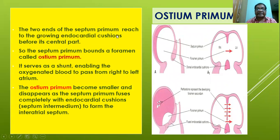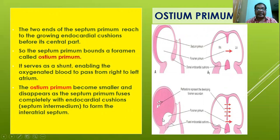The two ends of the septum primum reach the growing endocardial cushion before its central part, but the central part remains deficient, forming an opening called the ostium primum. It serves as a shunt enabling oxygenated blood to pass from right to left atrium. The oxygenated blood from the inferior vena cava, directed by the valve of the inferior vena cava, passes through this ostium primum into the left atrium. The ostium primum gradually disappears as the septum primum fuses completely with the septum intermedium to complete the interatrial septum.